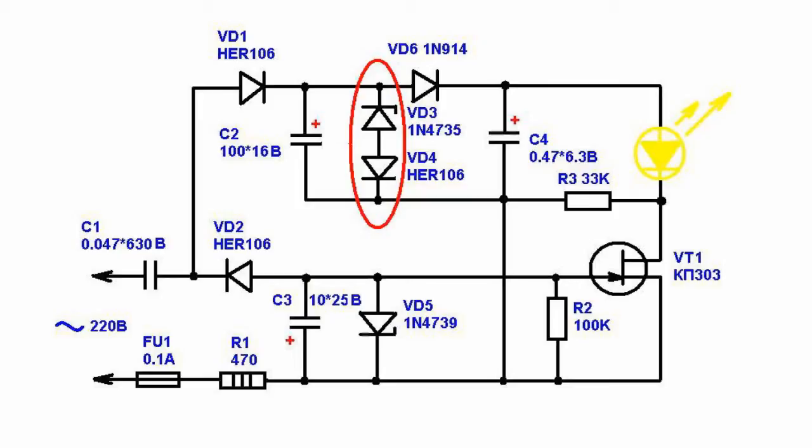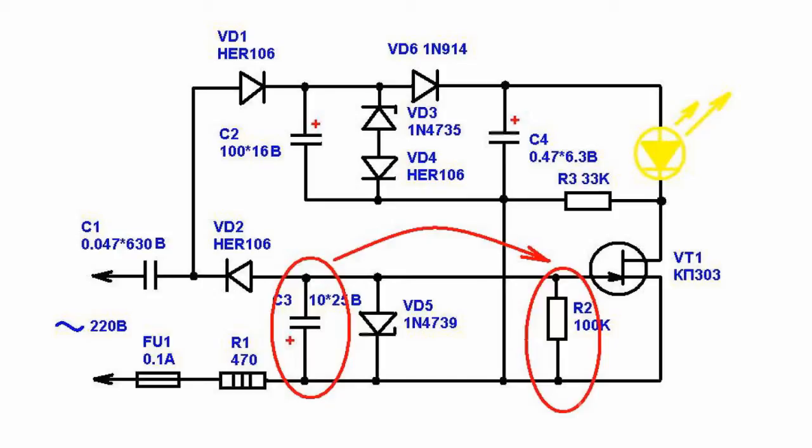During a power outage, capacitor C3 will start discharging through resistor R2. This will open the transistor.